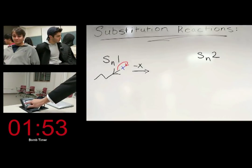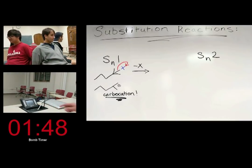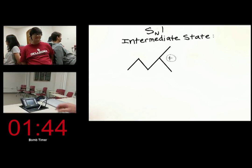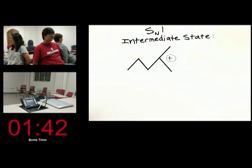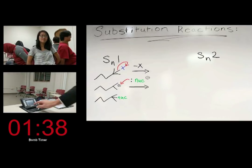It leads to the formation of a carbocation, a positively charged carbon atom. The carbocation is an intermediate in the reaction, and it is a relatively stable but not very easily isolated molecule. Then, the nucleophile attacks the carbocation, forming the final product.